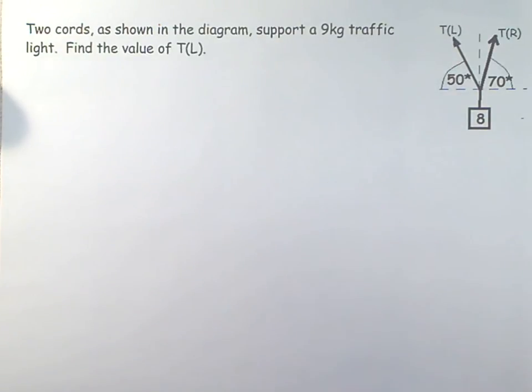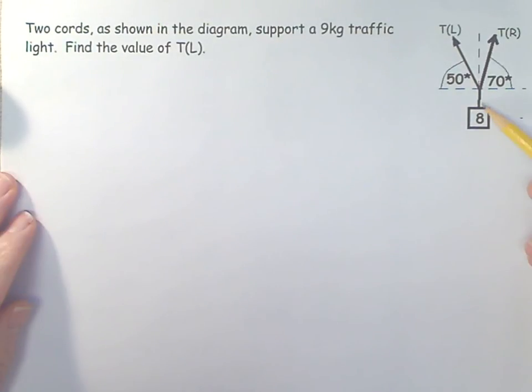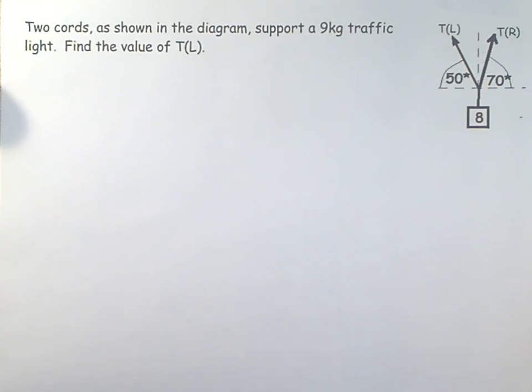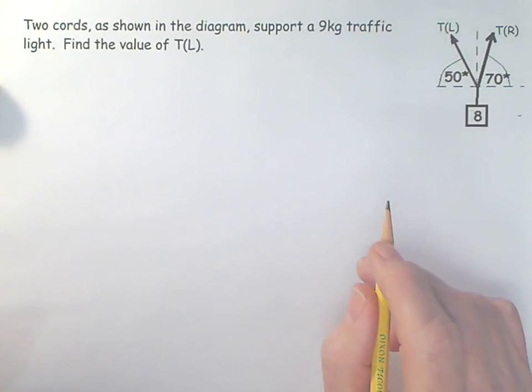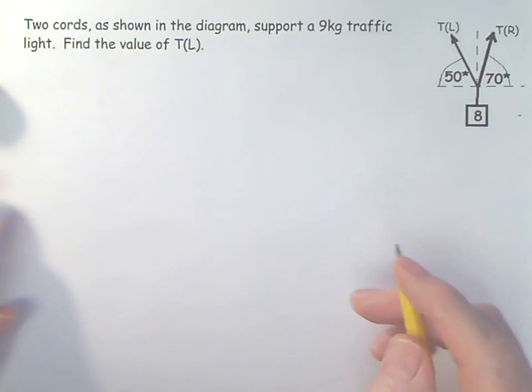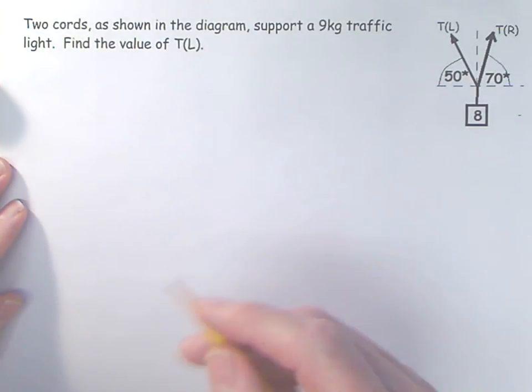So this is a classic traffic light problem. We have an 8 kilogram traffic light and it's supported by two wires. One wire on the right is at 70 degrees to the horizontal and the wire on the left is at 50 degrees to the horizontal. And it's important to realize that there are three ways to solve this. Two of them using trigonometry and one of them using a diagram. So let's start off by doing this using the classic resolve your forces. Use Newton's first law horizontally and then Newton's first law vertically and then solve.